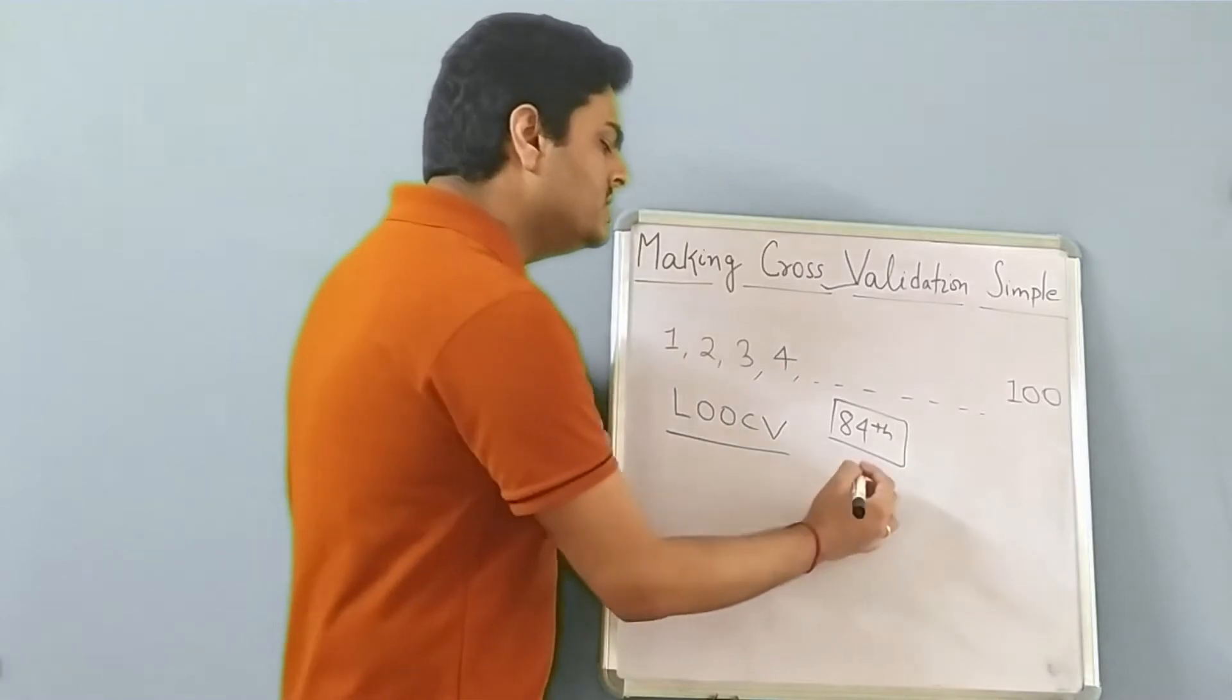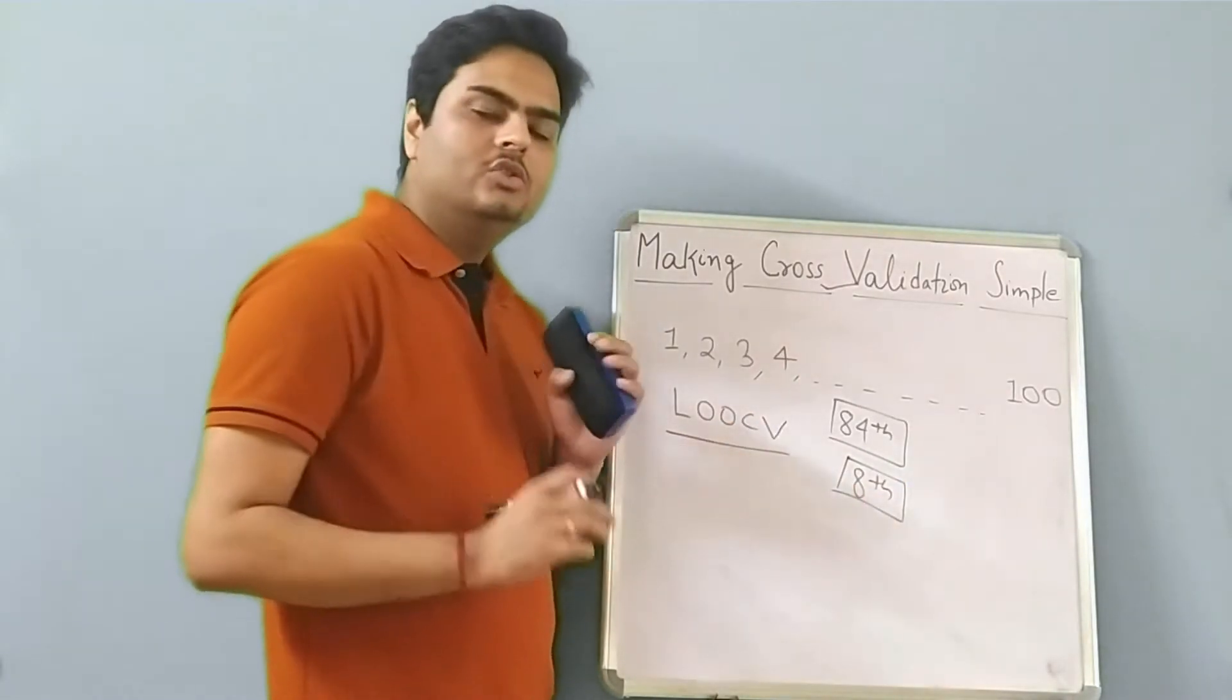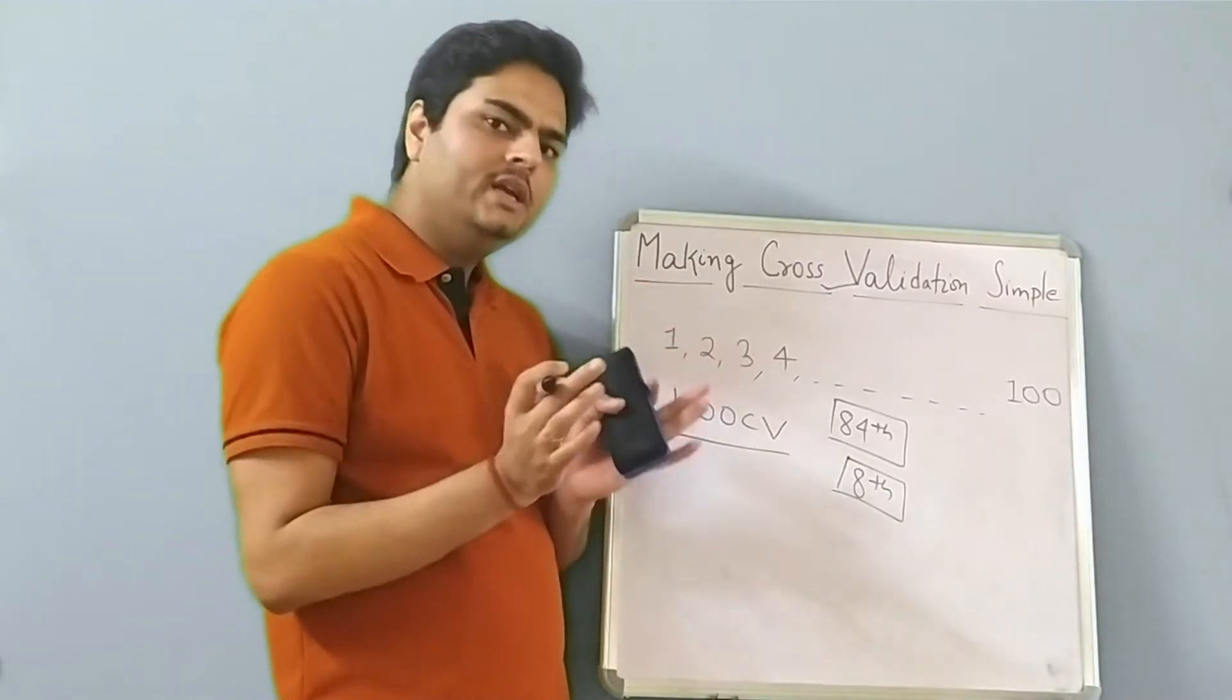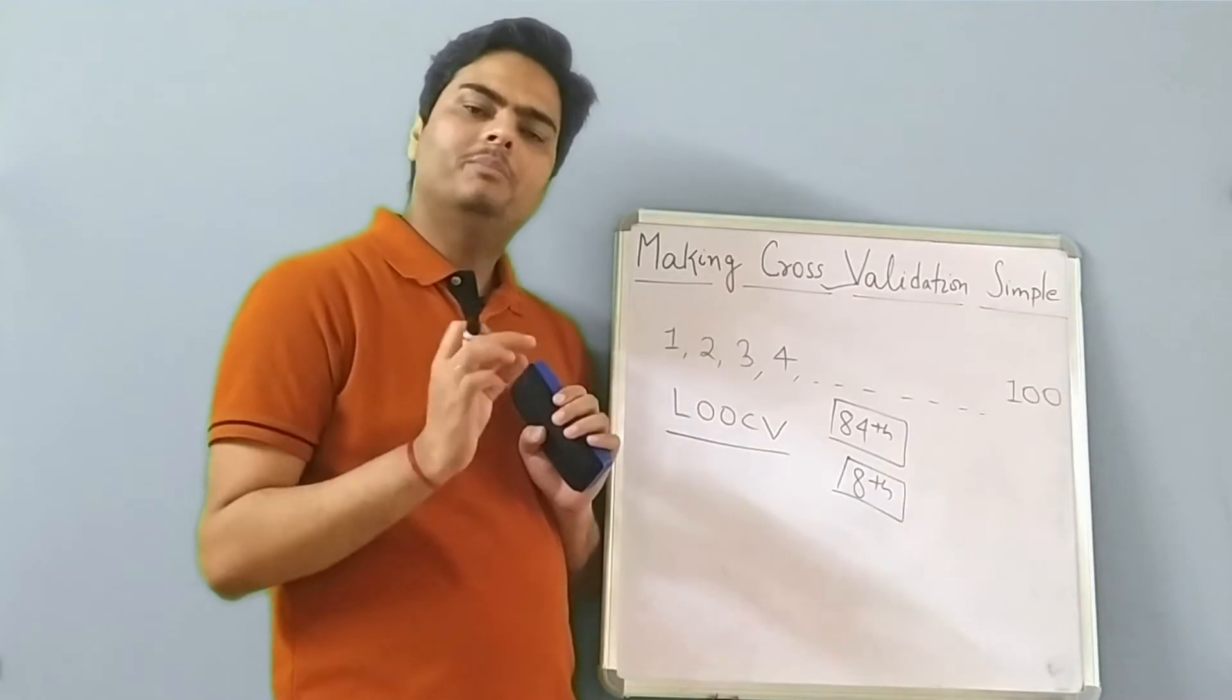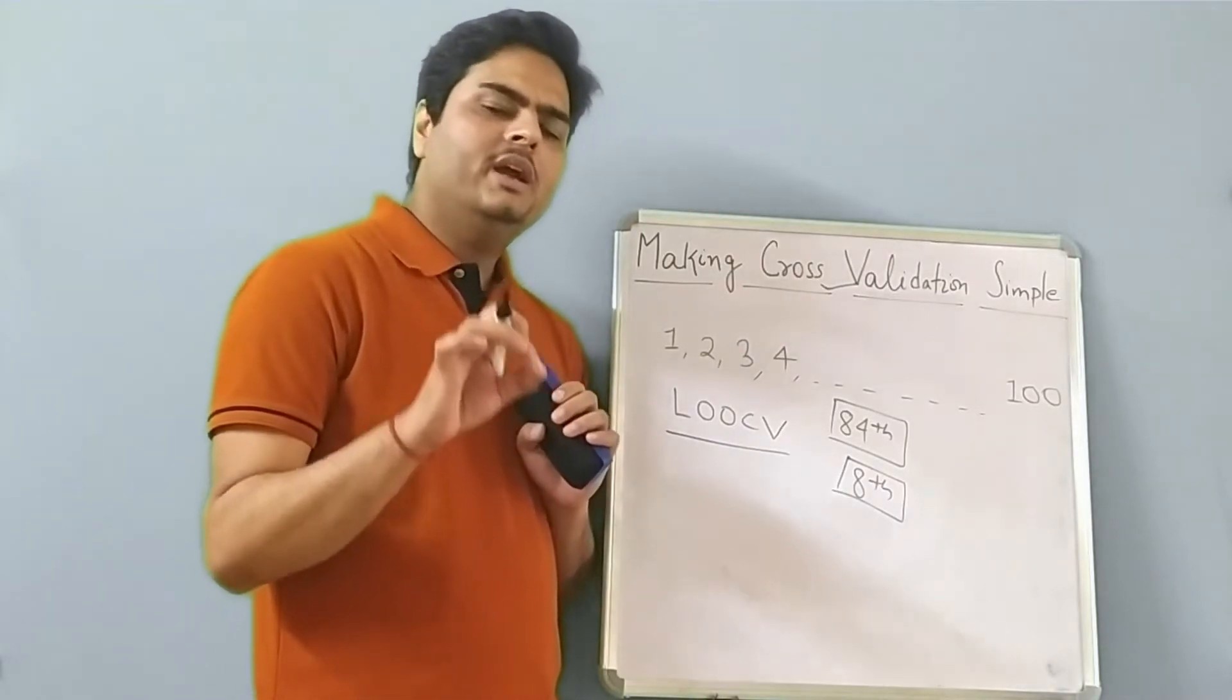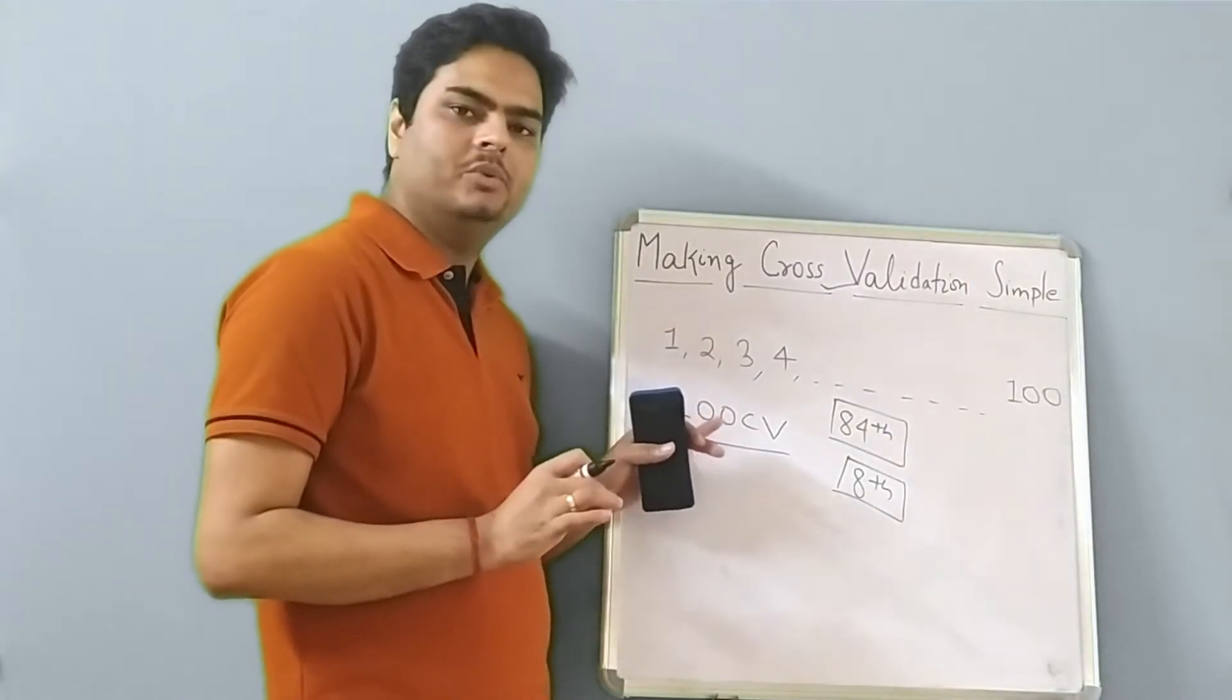In next iteration, let us keep eighth record out from the training. So model will get trained on all 99 records apart from this eighth record. So what is happening here is model is getting 99% of data to learn the pattern. That is the positive aspect of this approach.